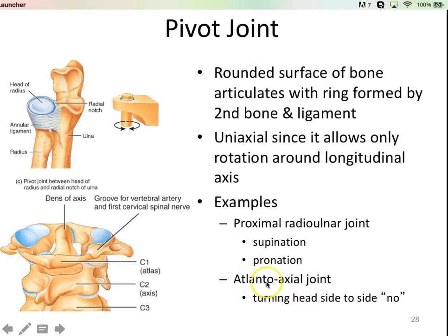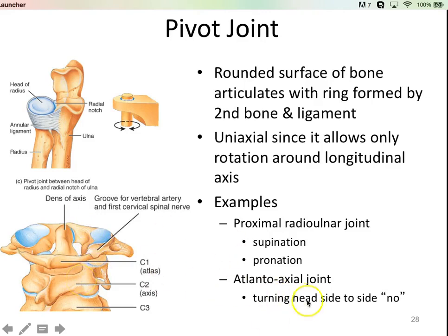Another example of a pivot joint is the one between your atlas and your axis. The atlas is the C1 vertebra, and the axis is the C2 vertebra. The dens of the axis allows the atlas to rotate past it — that's what allows your head to go side to side, to say no with your head.